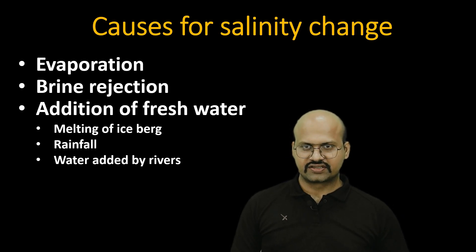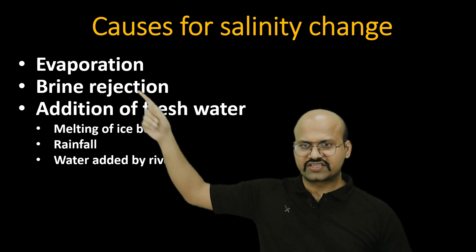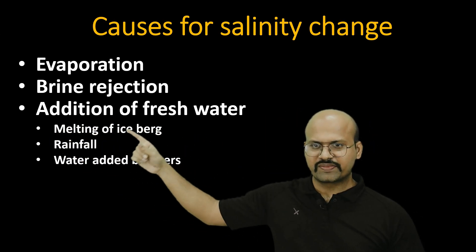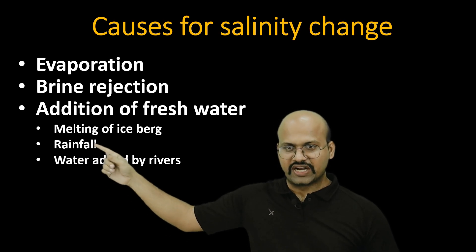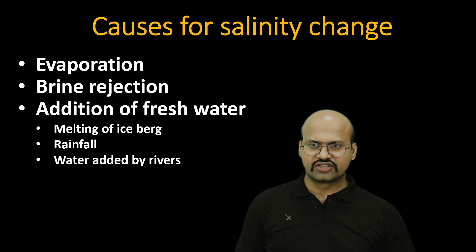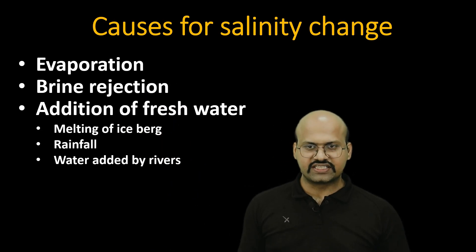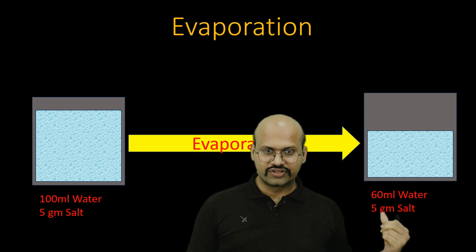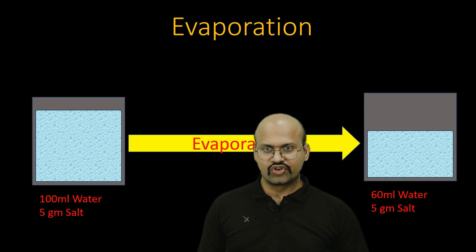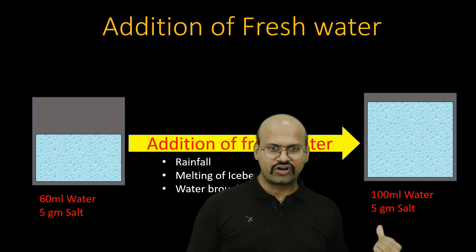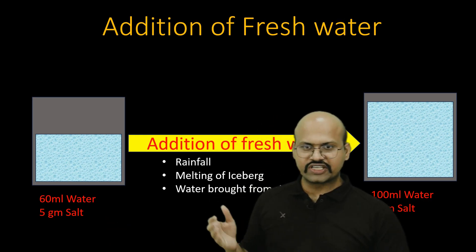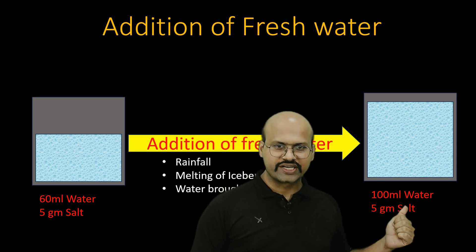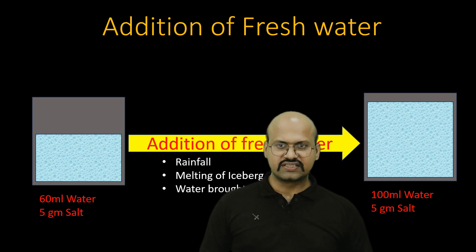The causes of salinity change are mainly evaporation, brine rejection, and addition of fresh water. Evaporation removes water but leaves the salt behind, so the percentage of salt increases and salinity increases. Fresh water can be added by rainfall, melting of icebergs, or rivers — the amount of salt remains the same but the amount of water increases, so the percentage of salt decreases and salinity decreases.